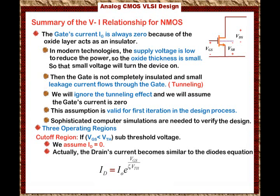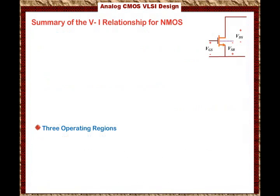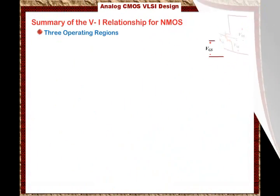You must account for the sub-threshold current if designing an actual circuit, as it can affect circuit behavior. In the cutoff region, the gate current is always zero unless the silicon dioxide breaks down, which means device failure. So you will always assume the gate current is zero. This is the first region.